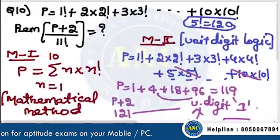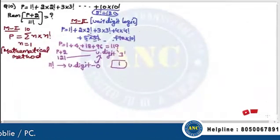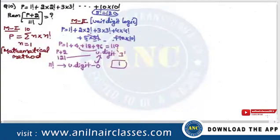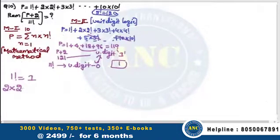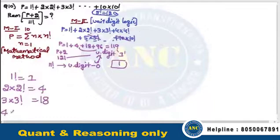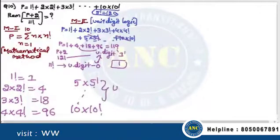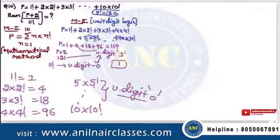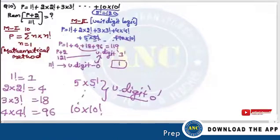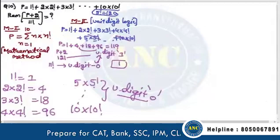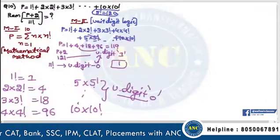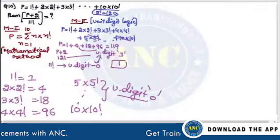More than solving the question, learn the concept I am using. Write Method 2 — very rarely will you find this method in regular textbooks. I played with the unit digit: 1 factorial unit digit is 1, 2 into 2 factorial is 4, 3 into 3 factorial is 18, 4 into 4 factorial gives 96. From 5 into 5 factorial till 10 into 10 factorial, unit digit will be 0. So unit digit of P is 1.